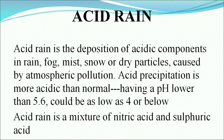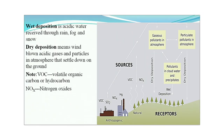Our next topic is acid rain. Acid rain is the deposition of acidic components in rain, fog, mist, snow, or dry particles caused by atmospheric pollution. Acid precipitation is more acidic than normal — normal pH is around 7, whereas acid rain has a pH around 5.6 or lower, as low as 4. Acid rain is a mixture of nitric acid and sulphuric acid. It can occur as wet deposition — acidic water received through rain, fog, and snow — or as dry deposition, where wind-blown acidic gases and particles in the atmosphere settle down on the ground.